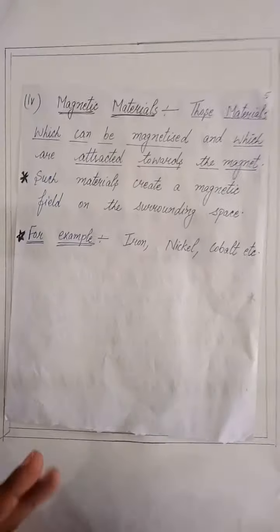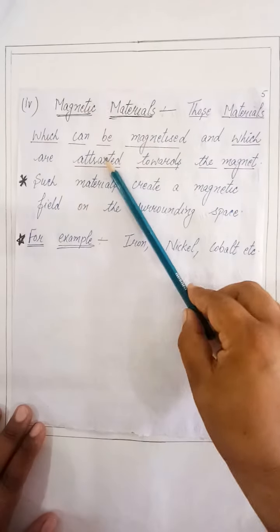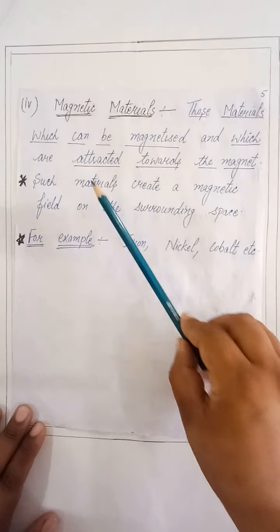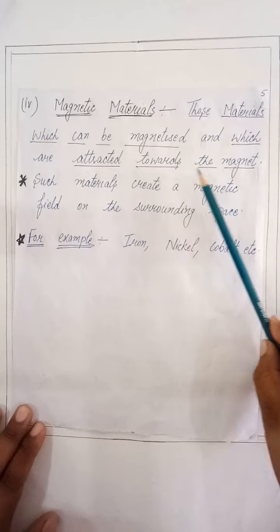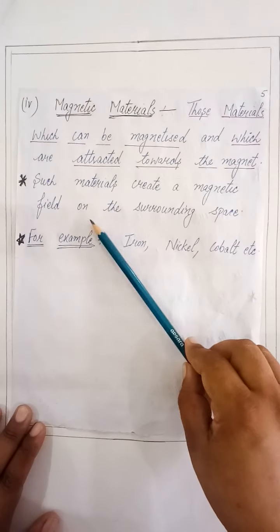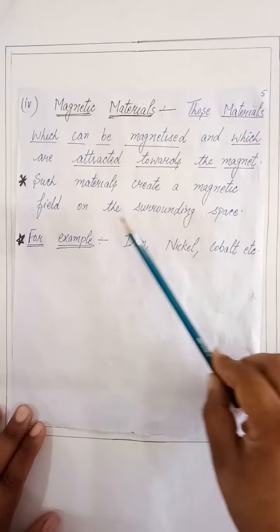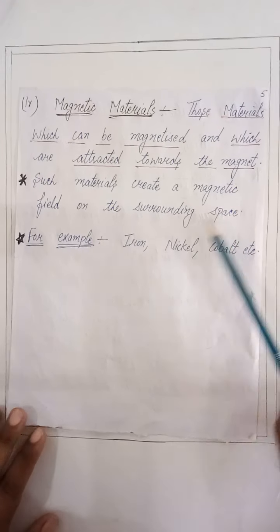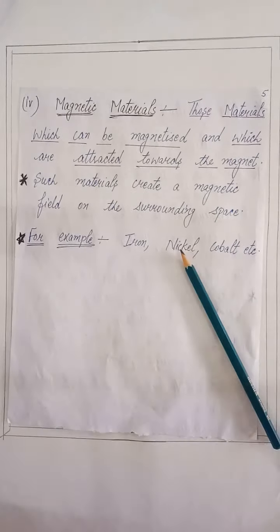Magnetic materials. Those materials which can be magnetized and which are attracted toward the magnet. Such materials create a magnetic field in the surrounding space. For example, iron, nickel, cobalt, etc.